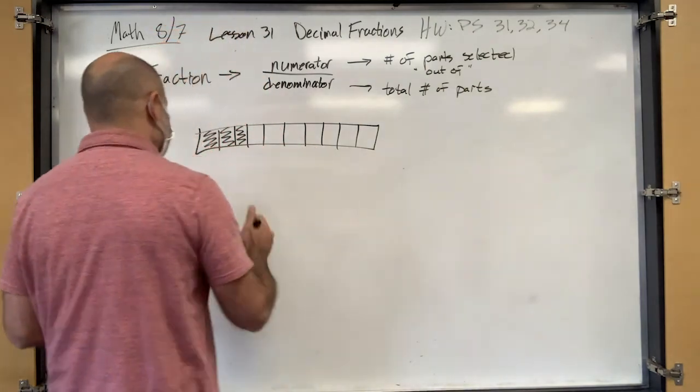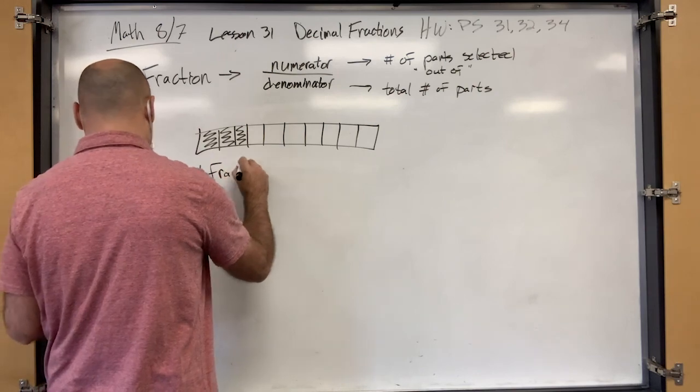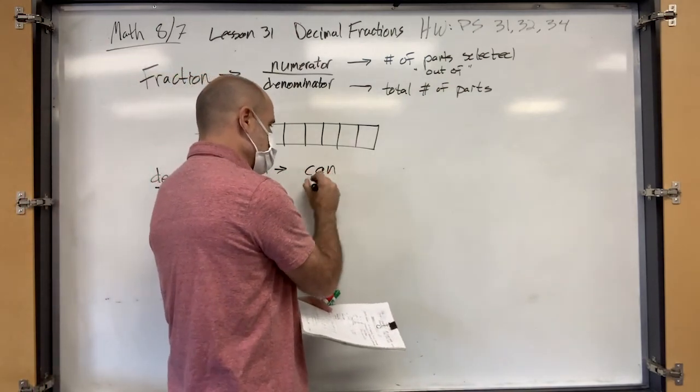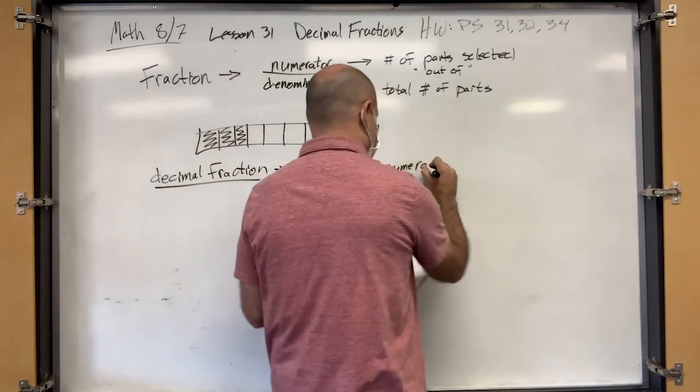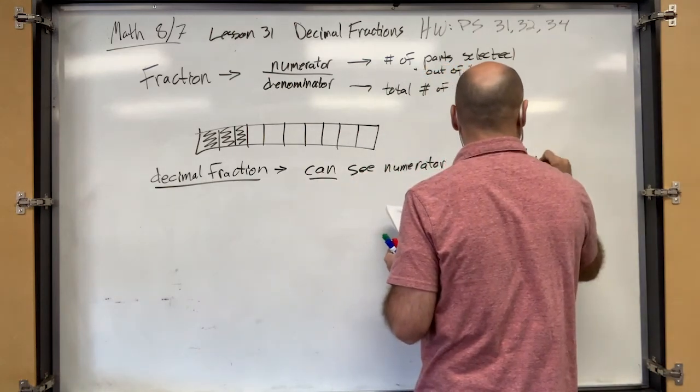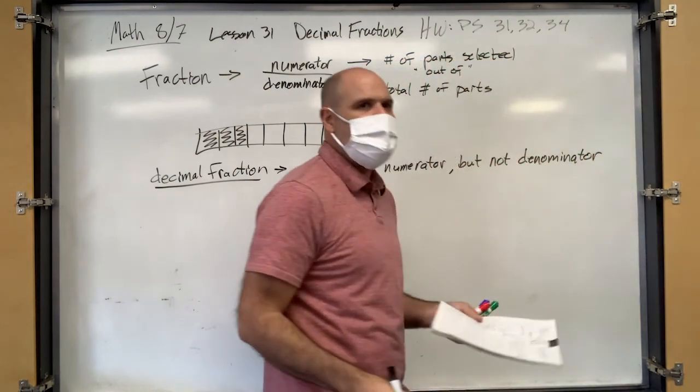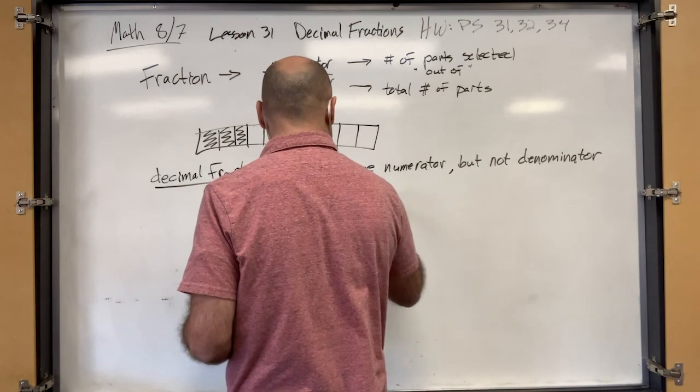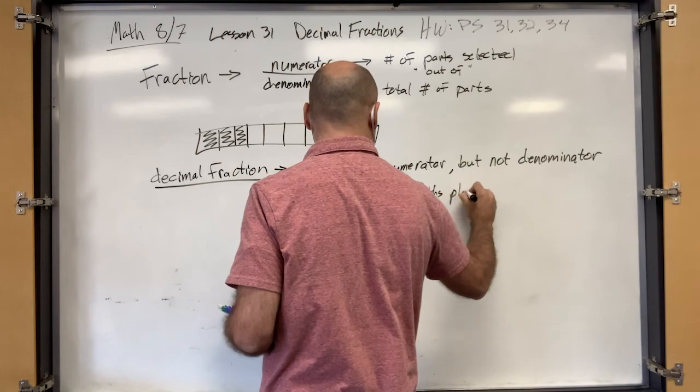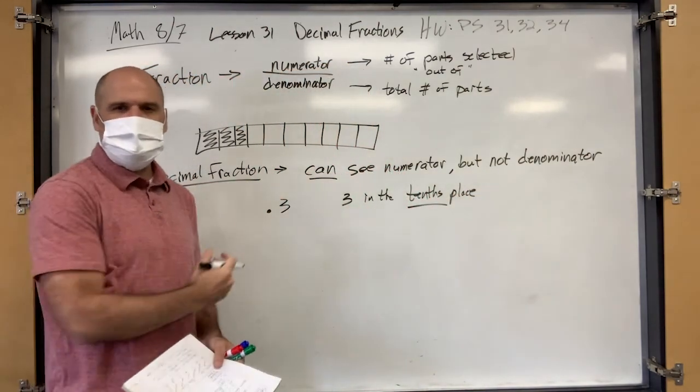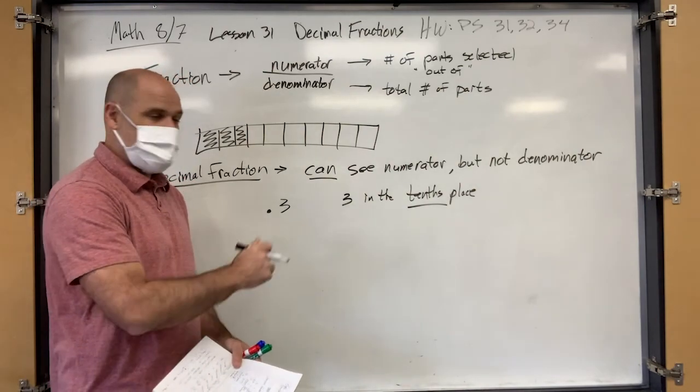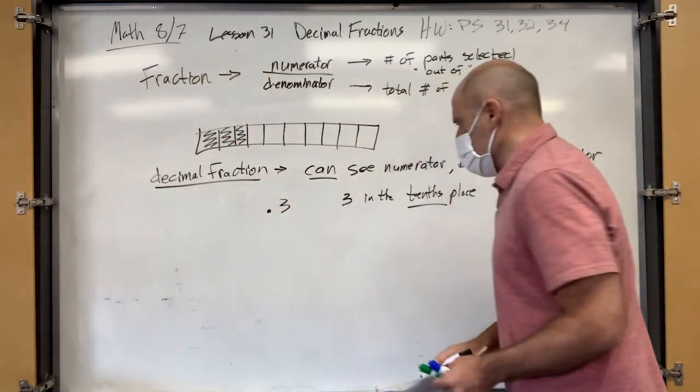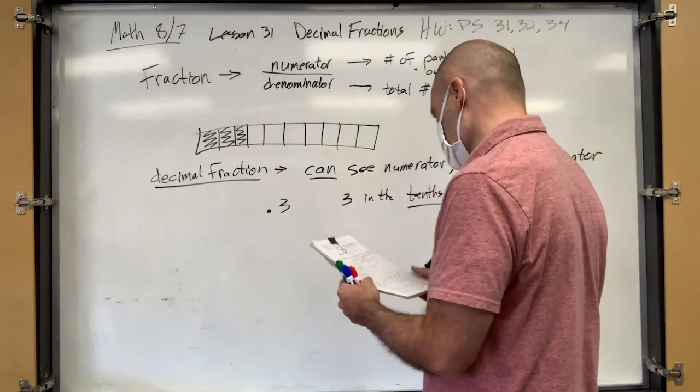All right. So when I talk about a decimal fraction, a decimal fraction is just a fraction. But here's the deal. You can see the numerator, but not the denominator. The denominator is based on the position of that digit. So if I say point three, this is three in the tenth place, right? So the first place after the decimal is the tenths place. So you have the denominator, you don't see over ten. But that's the denominator. That's how many total parts. So three out of the ten total parts. Now, really, you can just say three tenths because it ends in the tenths place. So you just say three tenths.